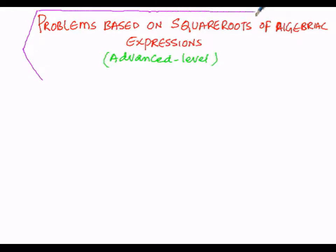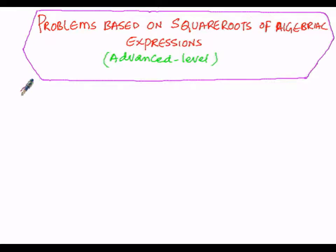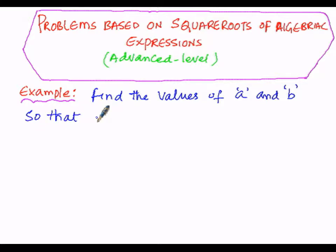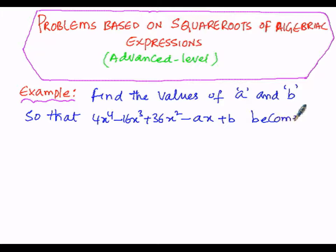The first example: find the square root, or in other words, find the values of a and b such that the algebraic expression 4x⁴ minus 16x³ plus 36x² minus ax plus b becomes a perfect square.